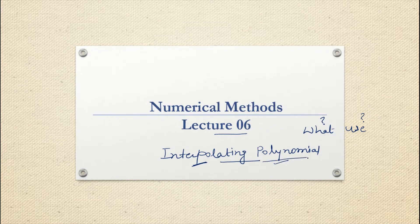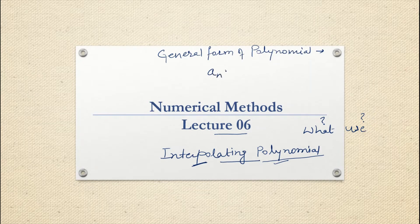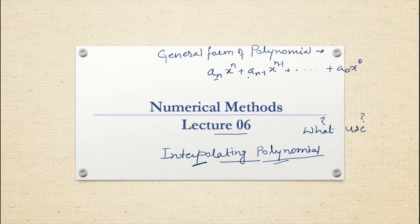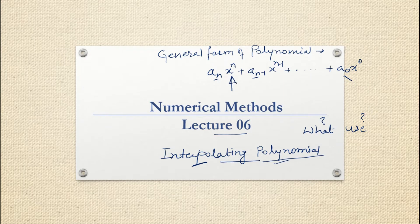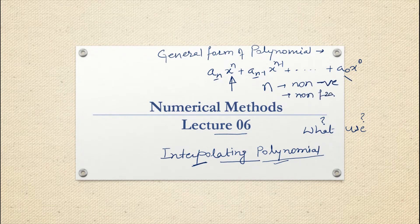Polynomial — we all know this term. The general form of a polynomial can be written as: a_n x^n + a_{n-1} x^{n-1} + ... + a_0 x^0. Here a_n, a_{n-1} are the coefficients, x is the variable, and the power is n, n-1, and so on. Two important properties: n should be non-negative and n should be non-fractional. So the power of x must be non-negative and non-fractional.